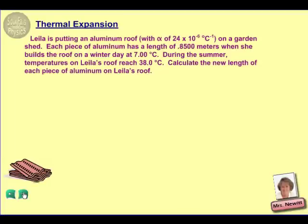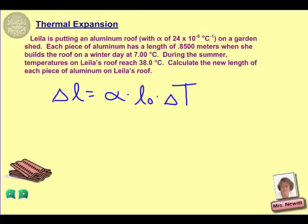So first of all, our linear expansion equation is quite simply the coefficient multiplied times the initial length times the change in temperature. Our coefficient is given as 24 times 10 to the negative 6th, and again that's degrees Celsius to the negative 1st.